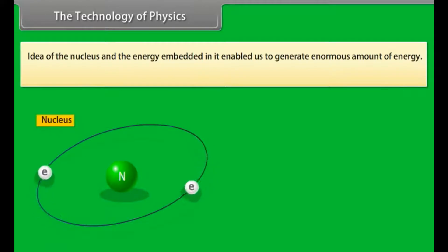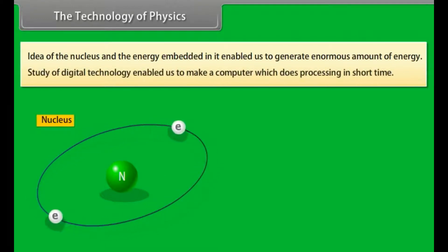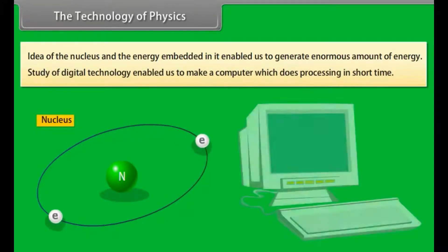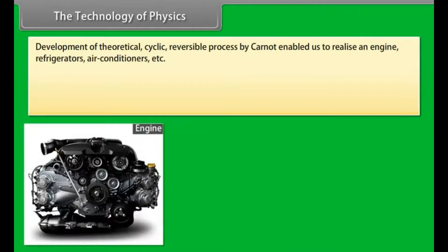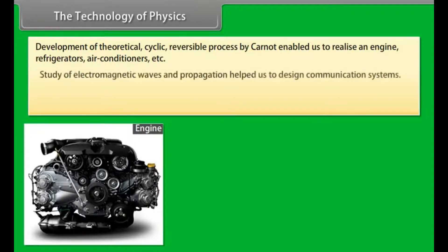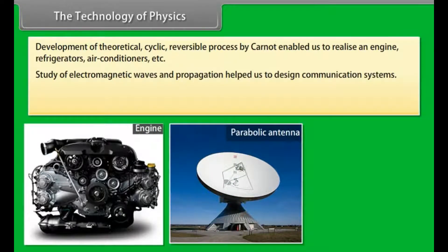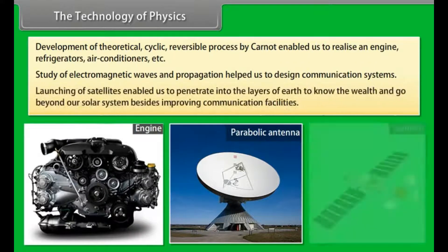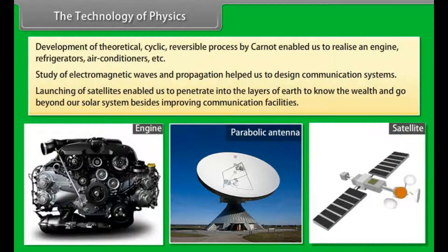The technology of physics. Idea of the nucleus and the energy embedded in it enabled us to generate enormous amount of energy. Study of digital technology enabled us to make a computer which does processing in short time. Development of theoretical cyclic reversible process by Carnot enabled us to realize an engine, refrigerators, air conditioners, etc. Study of electromagnetic waves and propagation helped us to design communication systems. Launching of satellites enabled us to penetrate into the layers of earth to know the wealth and go beyond our solar system besides improving communication facilities.